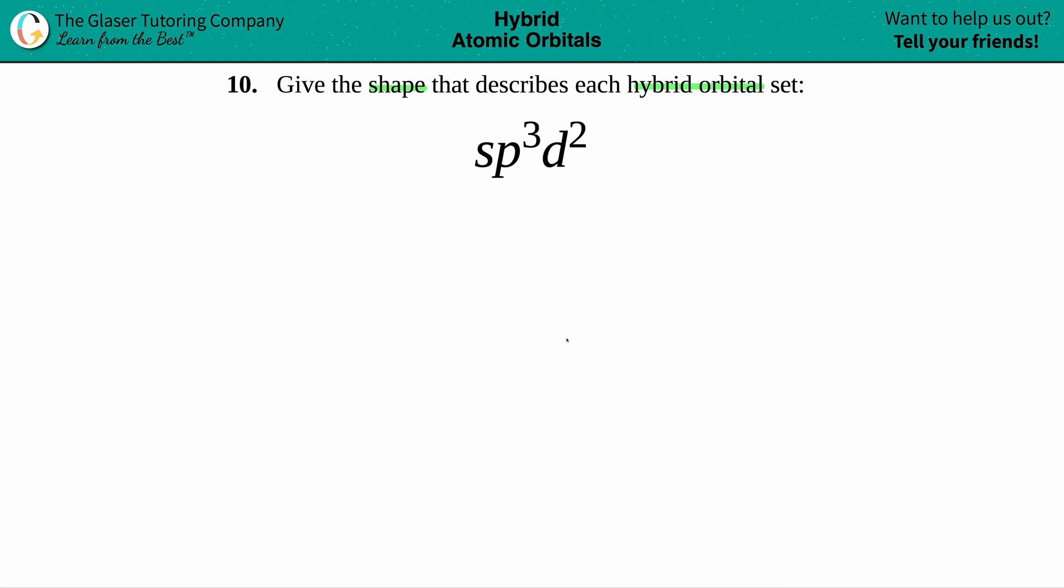So when they say give the shape, we have to draw the shape of what sp³d² orbitals look like. The easiest way to do this is to just write down how many total letters you see here. Well, I see that I have an s, and then when I have p³, I have three p's.